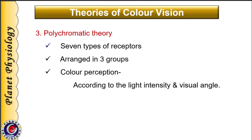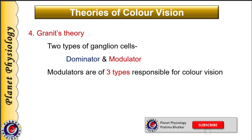Next is the polychromatic theory, which states there are seven types of receptors in the retina arranged in three groups. Color perception depends on the intensity of light and the visual angle that stimulates a specific group of receptors. This theory was also not accepted. The last theory was put forth by Granit, who proposed two types of ganglion cells — dominators and modulators. Modulators are of three types and are responsible for color vision. According to Granit, color perception is a function of ganglion cells and not the cones. This theory was also not accepted.